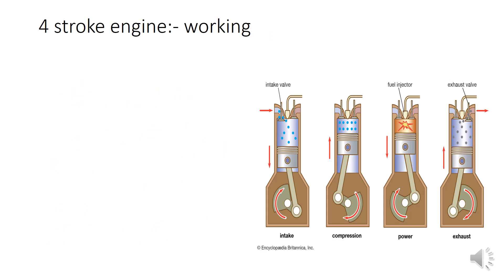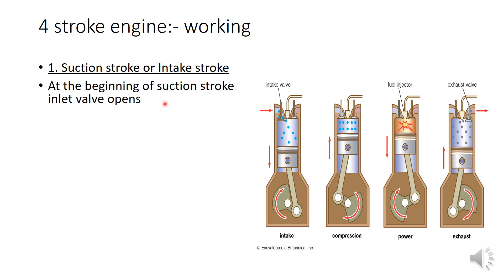Now we check what happens in each stroke, starting with the suction or intake stroke. This is the figure for that stroke. At the beginning of the suction stroke, the inlet valve opens. You can see here — the first valve is the inlet valve, and this is the exhaust valve. This is the piston, connecting rod, crank, etc. So the first thing happening in the suction stroke is that the inlet valve opens.